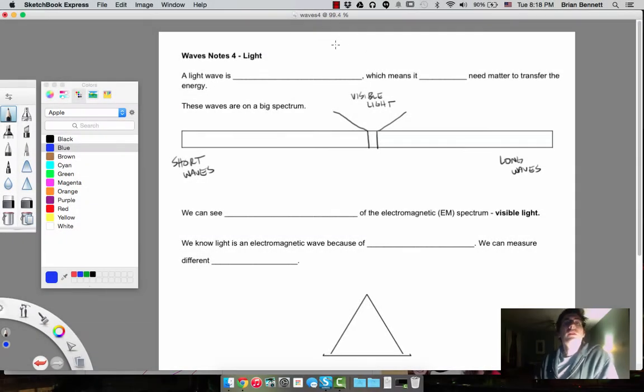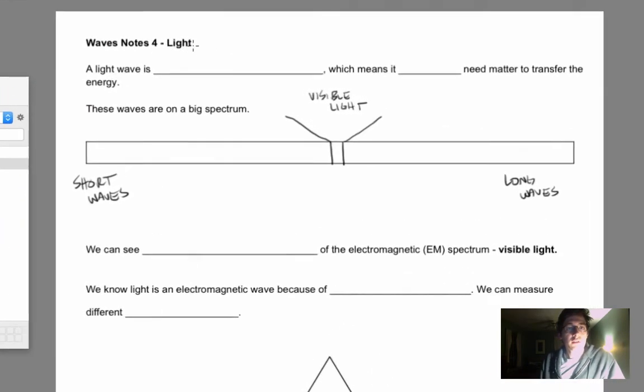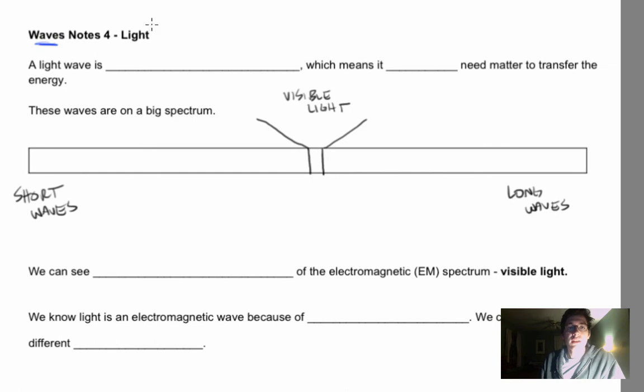Hey everybody, it's Mr. Ben here, back with another quick lesson. We're going to look at another section of notes on waves, and we're going to focus on light this time. So the big thing, the big distinction we need to make for light right off the bat is that a light wave is electromagnetic.